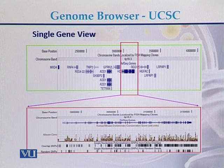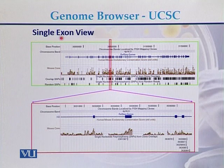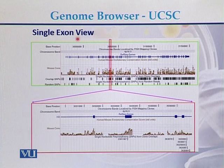If we want to see a single exon of a gene — as in eukaryotic genes, there are exons and introns — we can view just a single exon with the help of the UCSC genome browser. Here this is the single exon view.